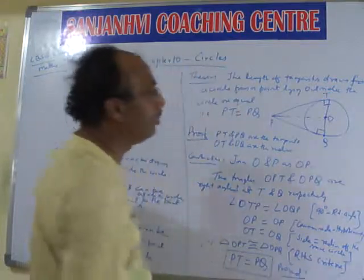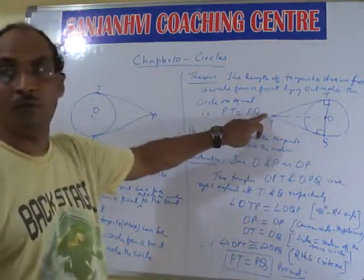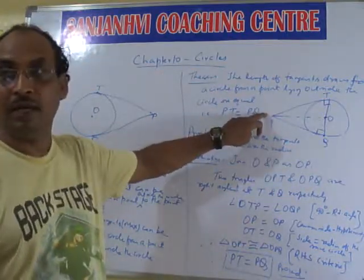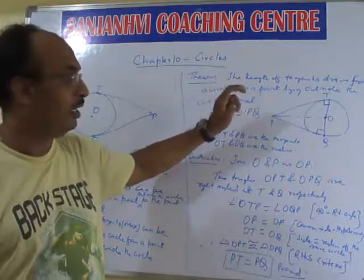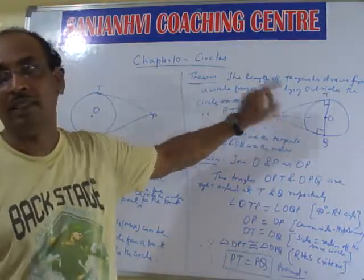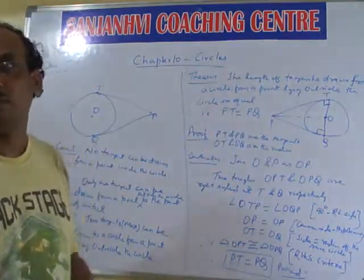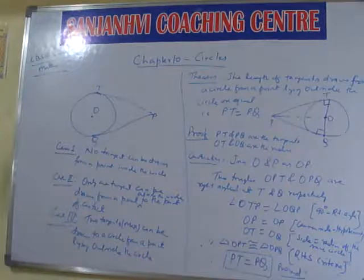So the length of the tangent drawn from a point outside the circle are equal to each other.